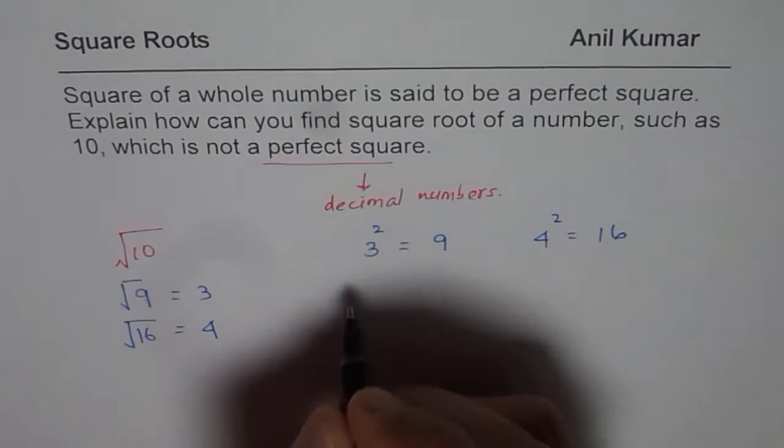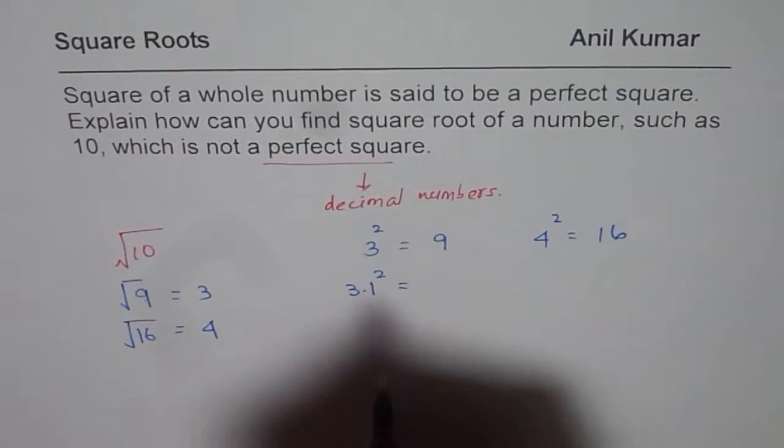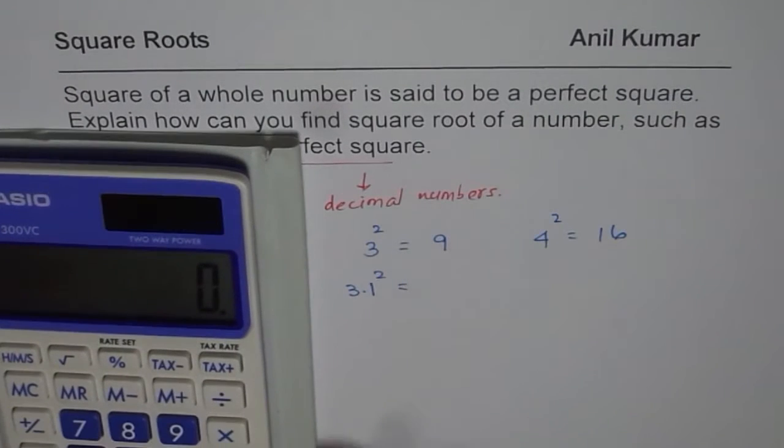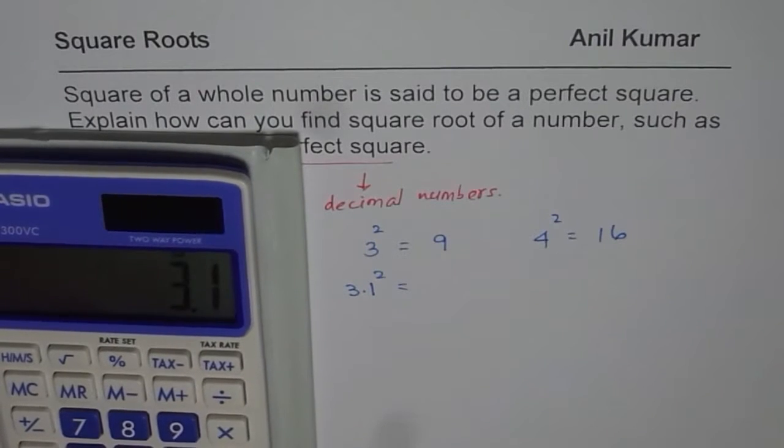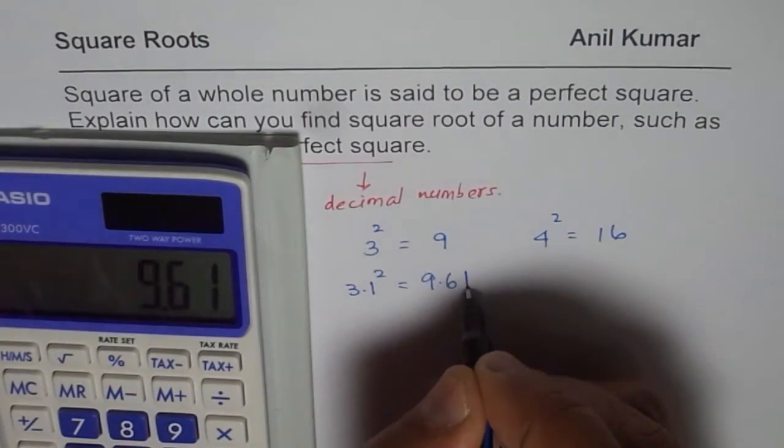Now, 10 is very close to 9, so we can try what is square of 3.1 and then check. So let us check 3.1 square is how much? So we have 3.1 times 3.1, that means square, equals to 9.61. We get 9.61.